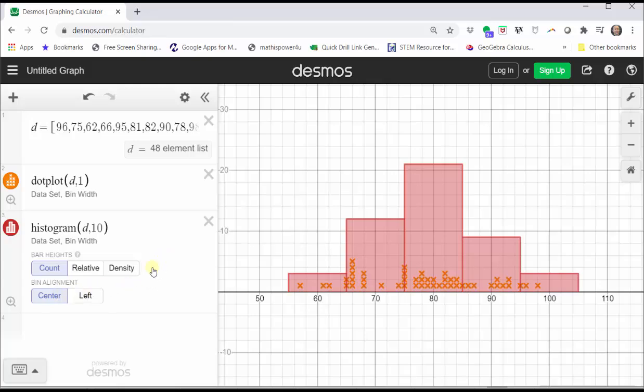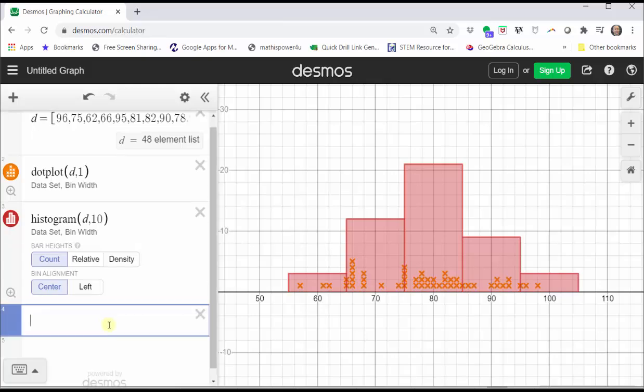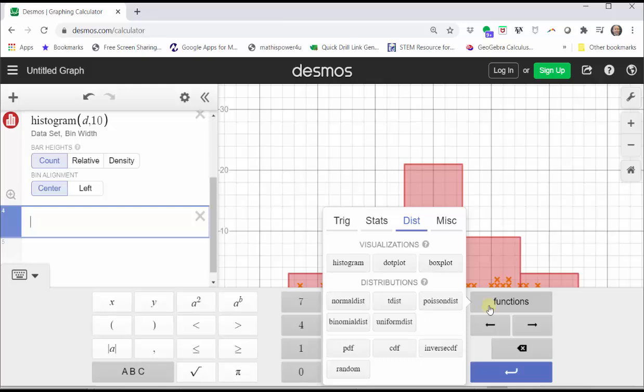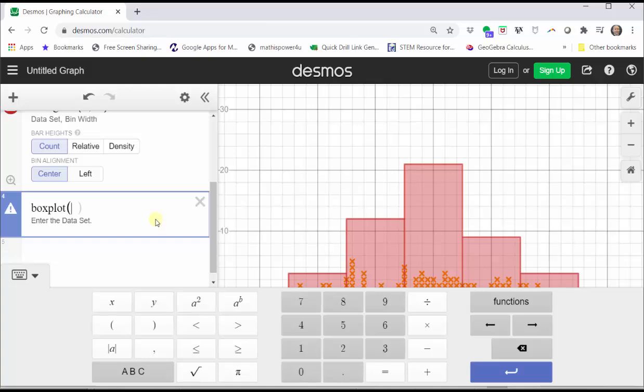To do this, we will click in cell four, go back to the Desmos keypad, click functions, under the distribution menu, click box plot, and then enter the list of data, which is the variable D.